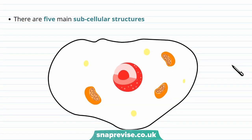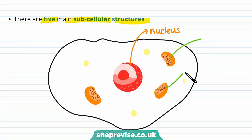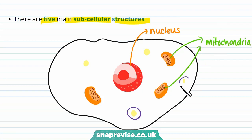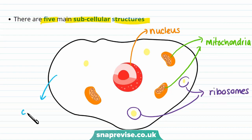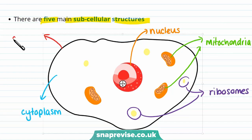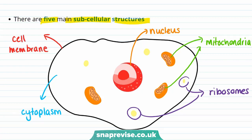Animal cells have five main subcellular structures. They have the nucleus; mitochondria, which are known as the powerhouse of the cell; ribosomes, which are the site of protein synthesis; the cytoplasm; and the cell membrane, which holds the cell together and controls what goes in and what goes out.